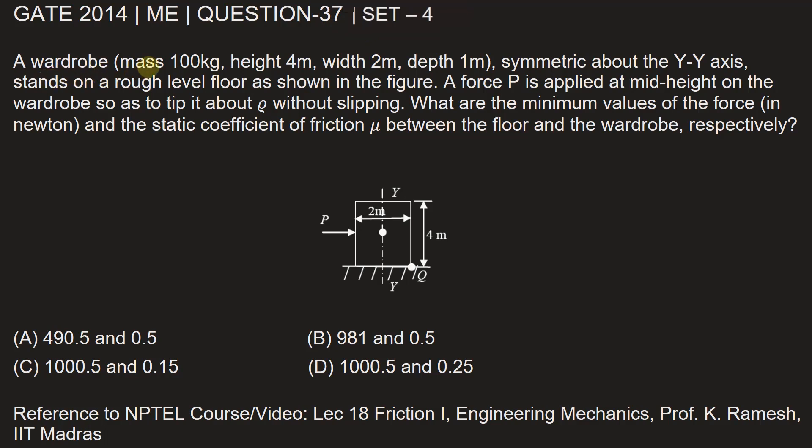A wardrobe having mass 100 kg, height 4 m, width 2 m, depth 1 m, symmetric about yy axis, stands on a rough level floor as shown in the figure. A force P is applied at mid-height of the wardrobe so as to tip it about Q without slipping. What are the minimum values of force in Newton and the static coefficient of friction mu between the floor and the wardrobe respectively?